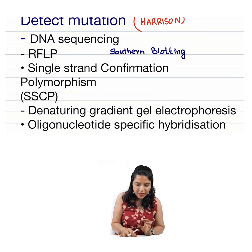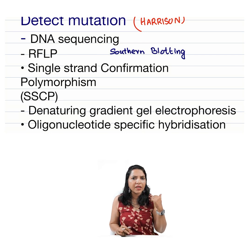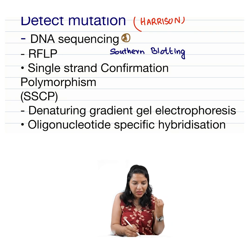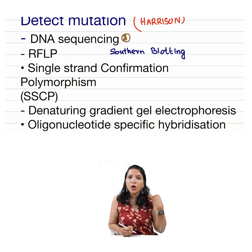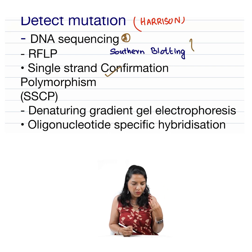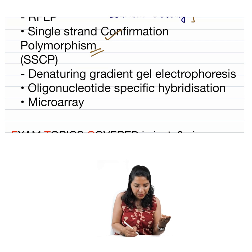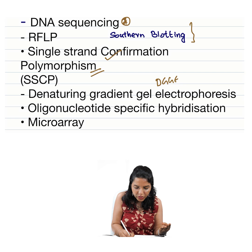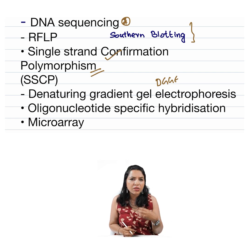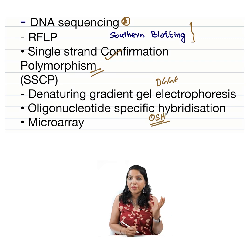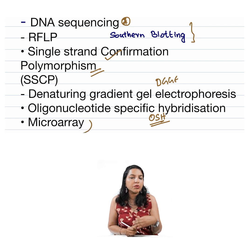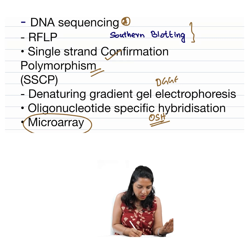According to Harrison, there are different sets of other techniques. One is DNA sequencing techniques like Sanger sequencing, pyrosequencing, or even next-generation sequencing. Then restriction fragment length polymorphism, also given in Robbins. Then Southern blotting, which detects DNA. Then single strand conformation polymorphism — SSCP — denaturing gradient gel electrophoresis — DGGE — and oligonucleotide specific hybridization — OSH — similar to Southern blotting but using an oligonucleotide probe. And microarray, specifically DNA microarray, since mutation detection involves DNA.